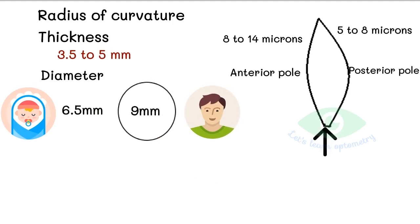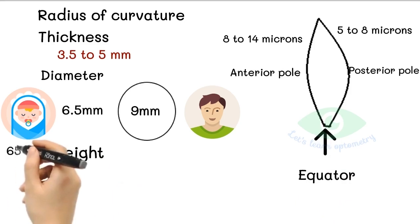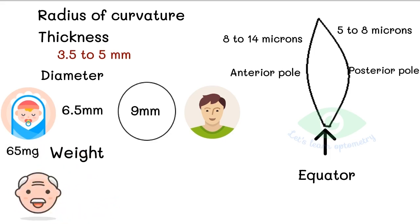The equator is the larger circumference of the lens at the location between the two poles. The weight of the lens varies with age. At birth, it is about 65 mg which increases rapidly to 125 mg by the end of first year. At the age of 70 to 80 years, the lens weighs approximately 260 mg.